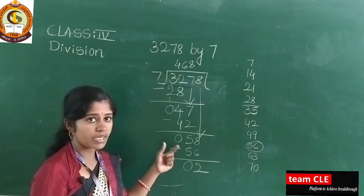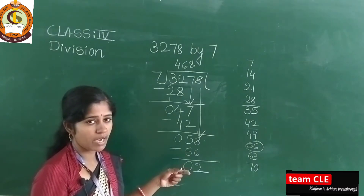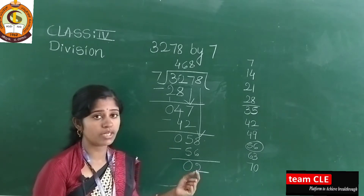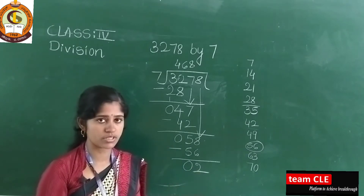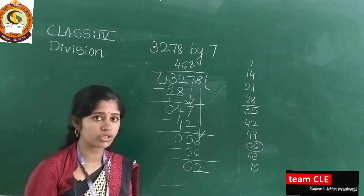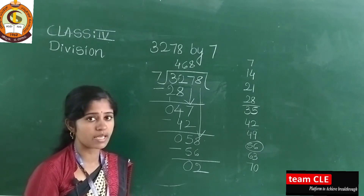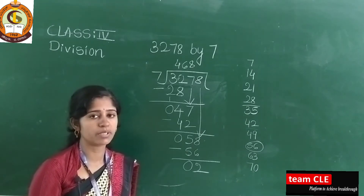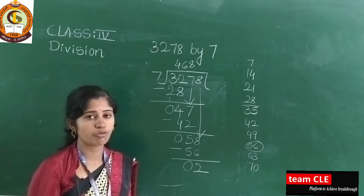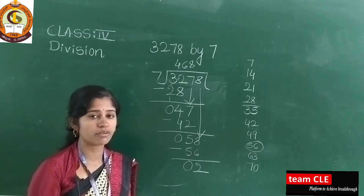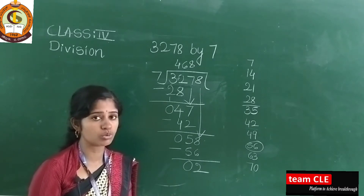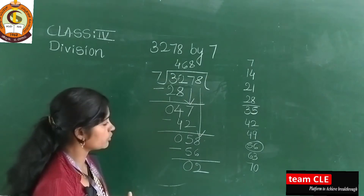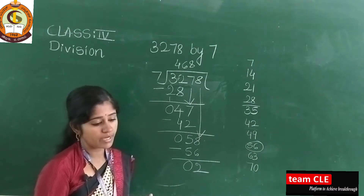Addition and multiplication have their relation, and division and subtraction have their relation. In mathematics there are four important operations: addition, subtraction, multiplication, and division. These operations are very important and you must know them. This is how you solve each step of the example.